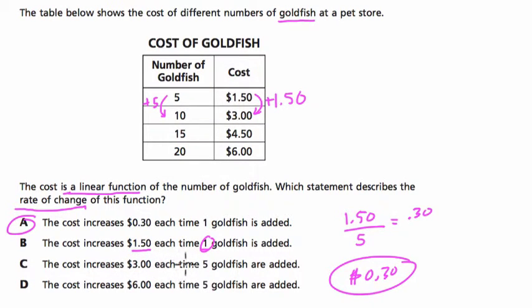The cost increases $3 each time five goldfish are added. That's not true, right? You see the $3 here, we add five, but it doesn't mean it went up three. It means this is the total cost when we have 10.